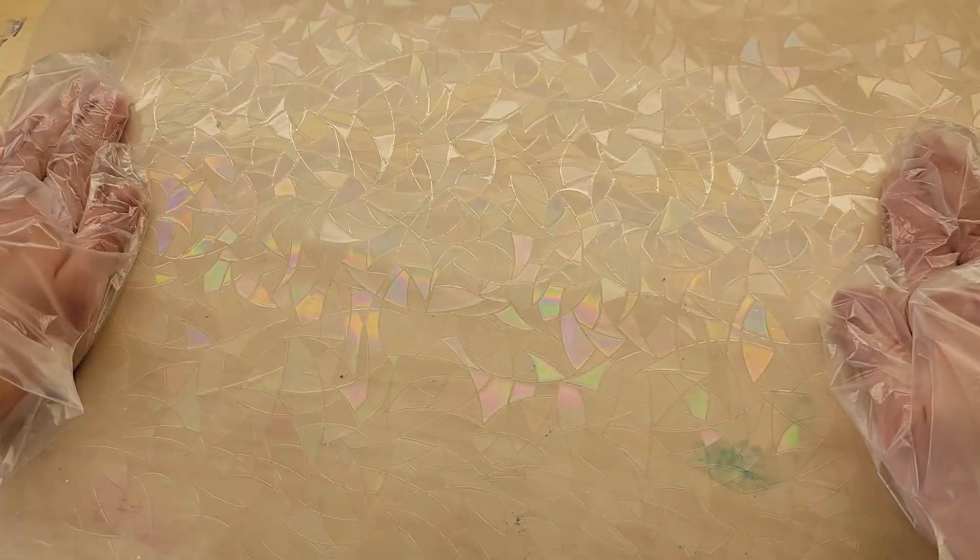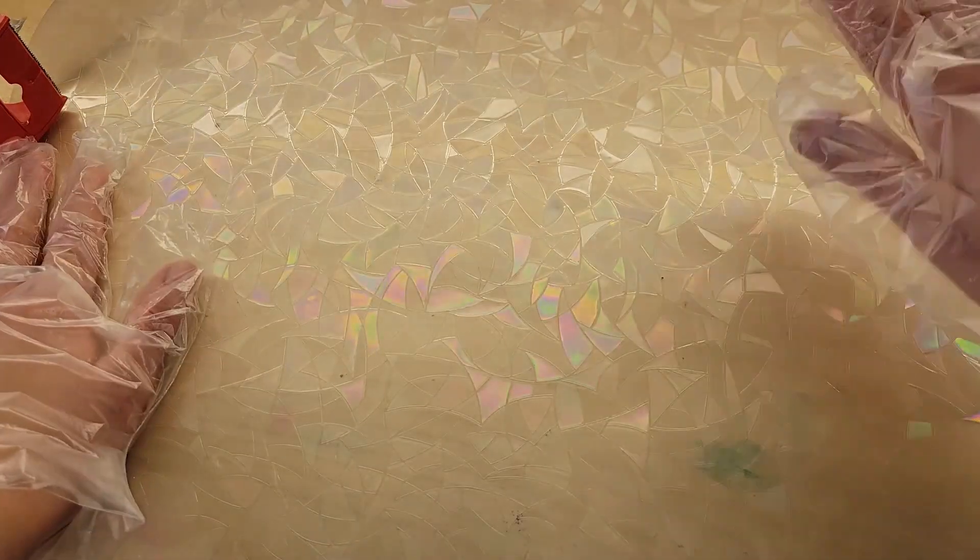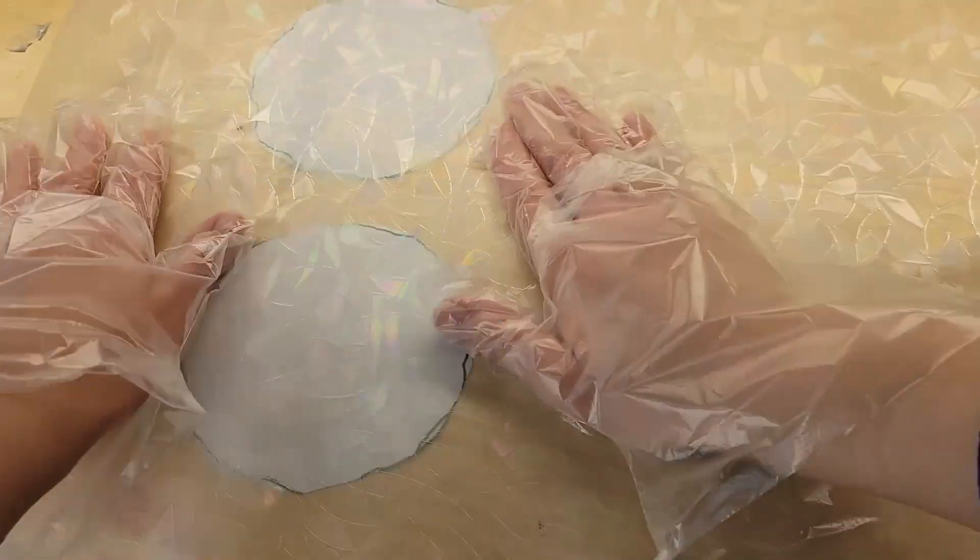I cut off the size that I wanted and you want to make sure that you're pouring on this holographic rainbow side. You'll be able to tell the backside is completely flat. There's no rainbow effect back there and you can feel there's a little bit of texture on this rainbow side. So you just want to make sure that you pour on the holographic rainbow side.